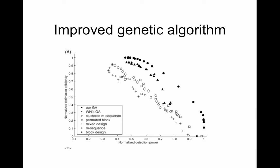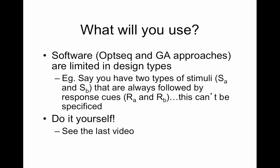So what will you use? It really depends on how you feel. OptSeq again is just FIR model and genetic algorithm approaches are also a little limited to design types. As I said you can just do it yourself, see the last video, crank out a ton of simulations and pick your most efficient designs.